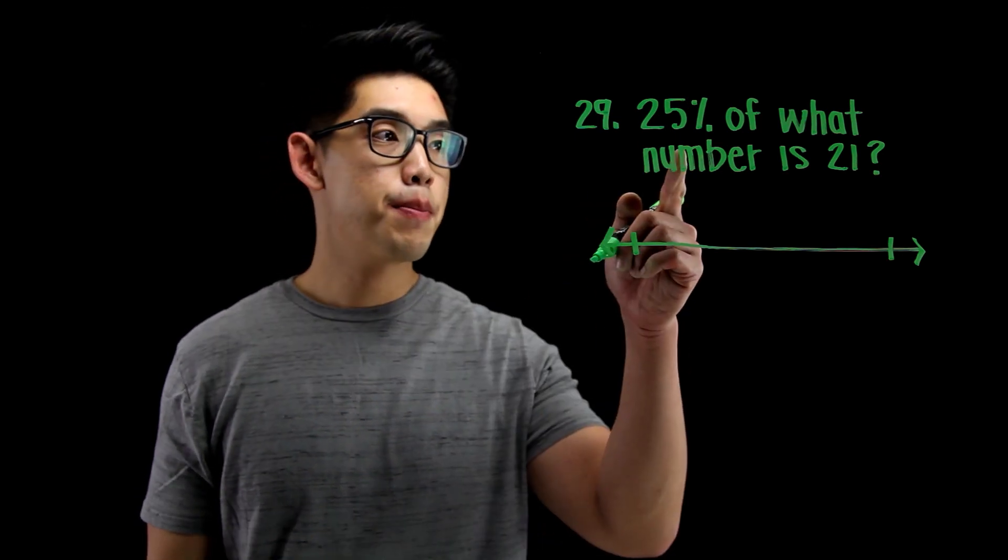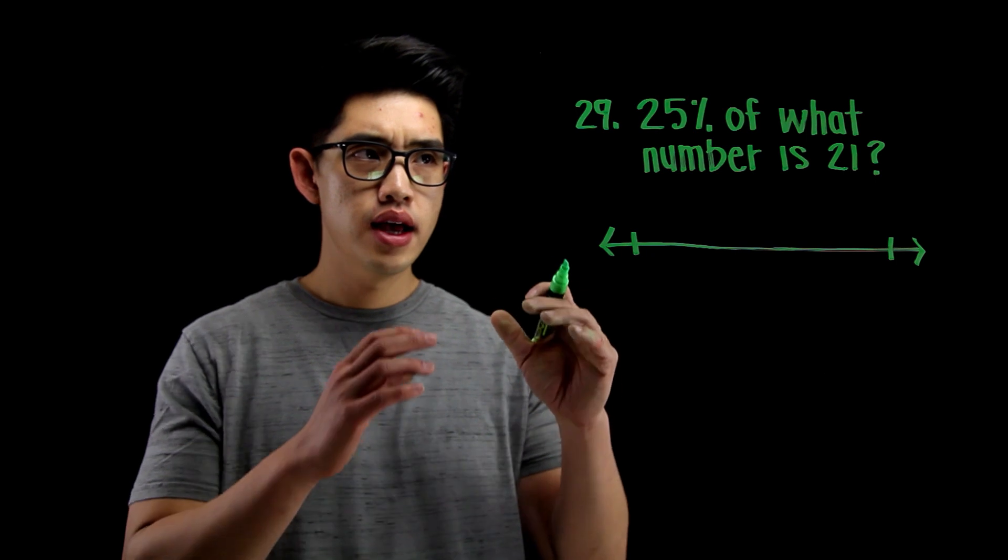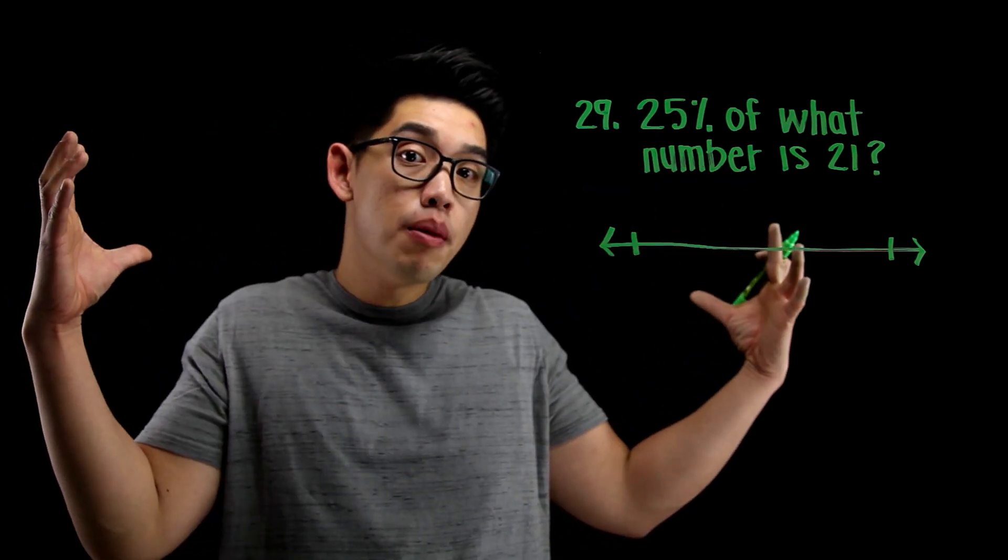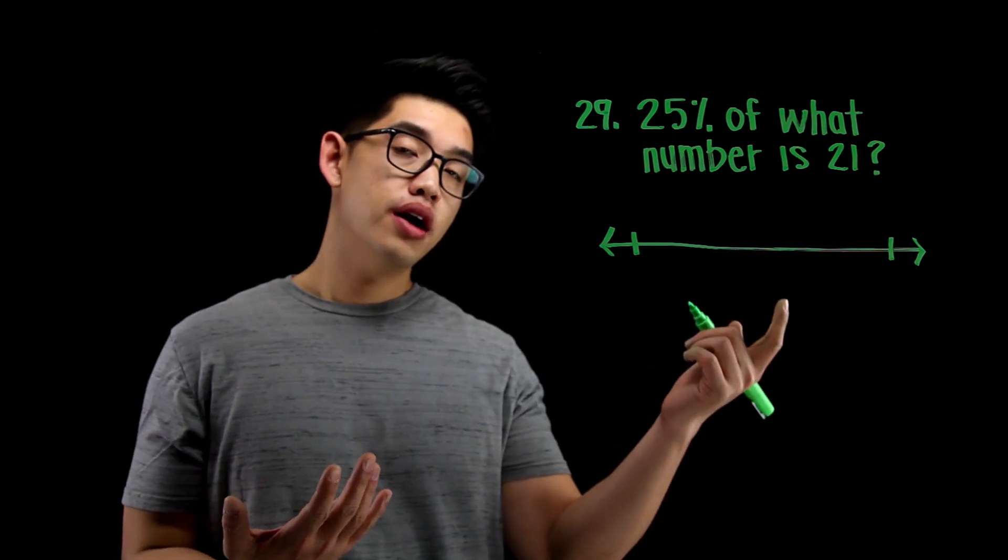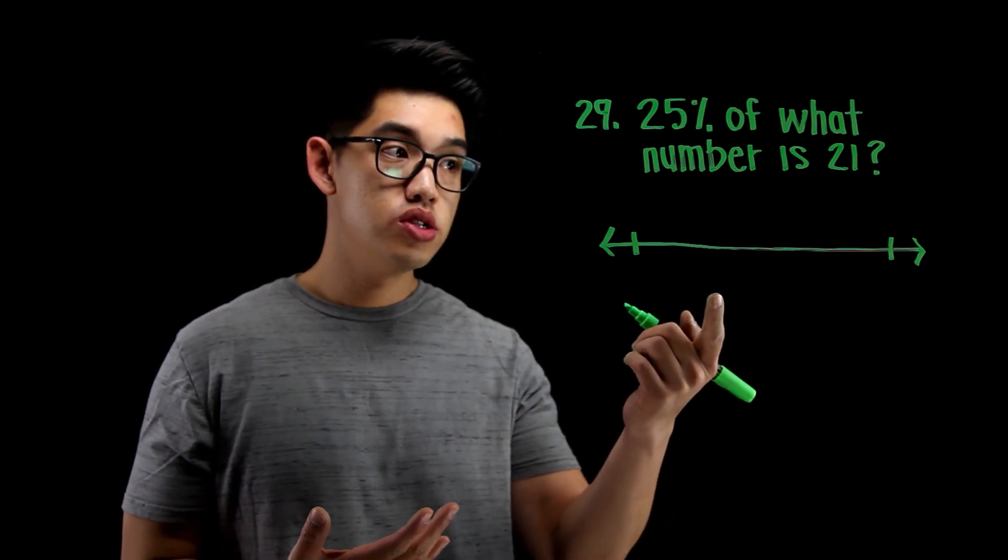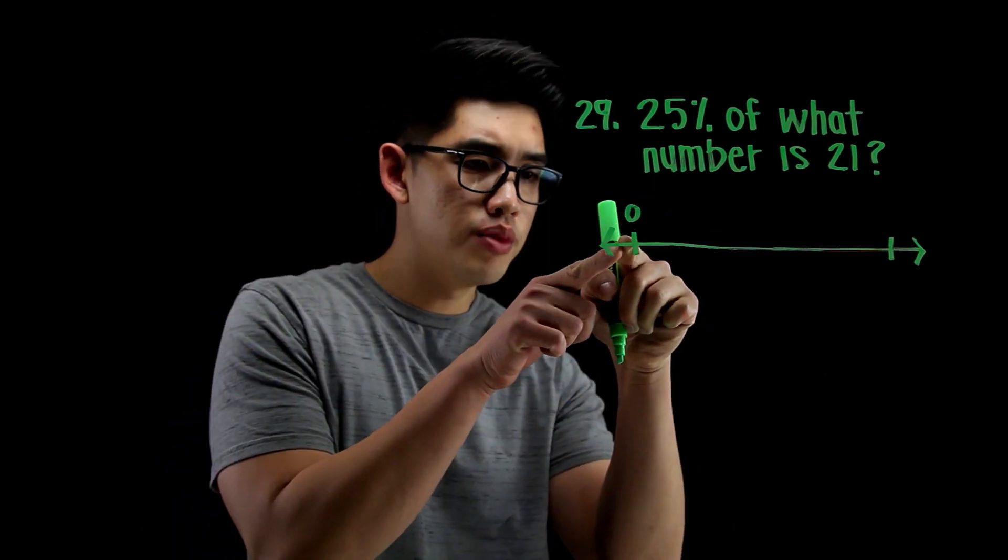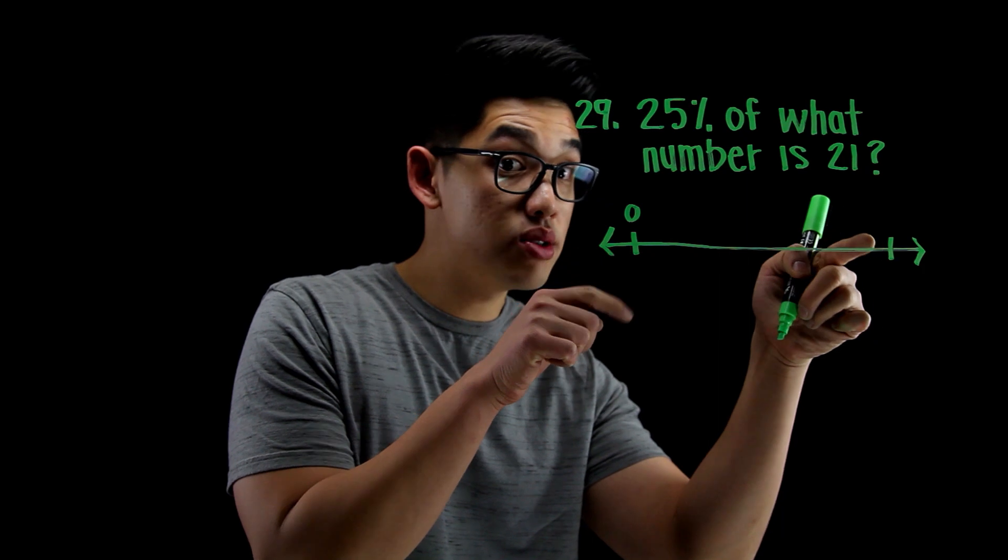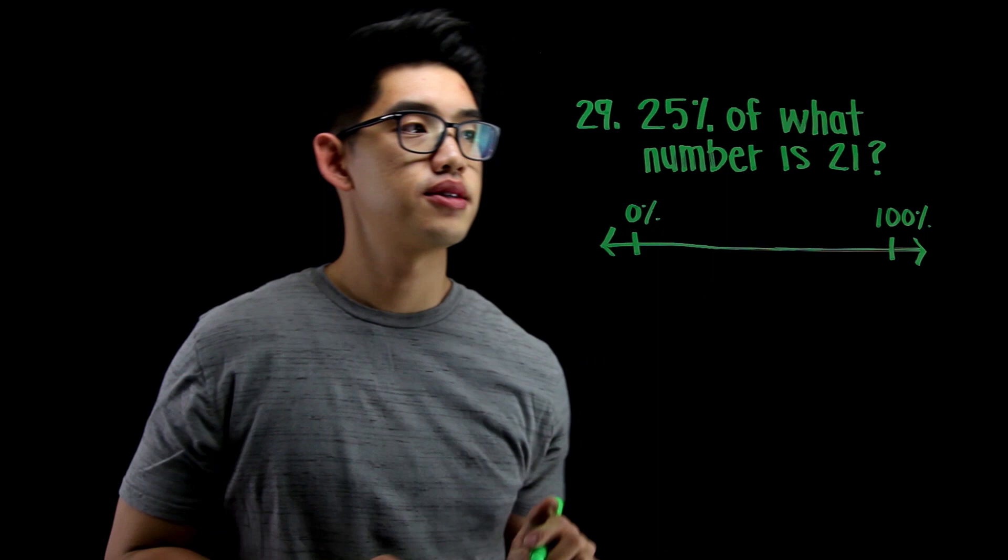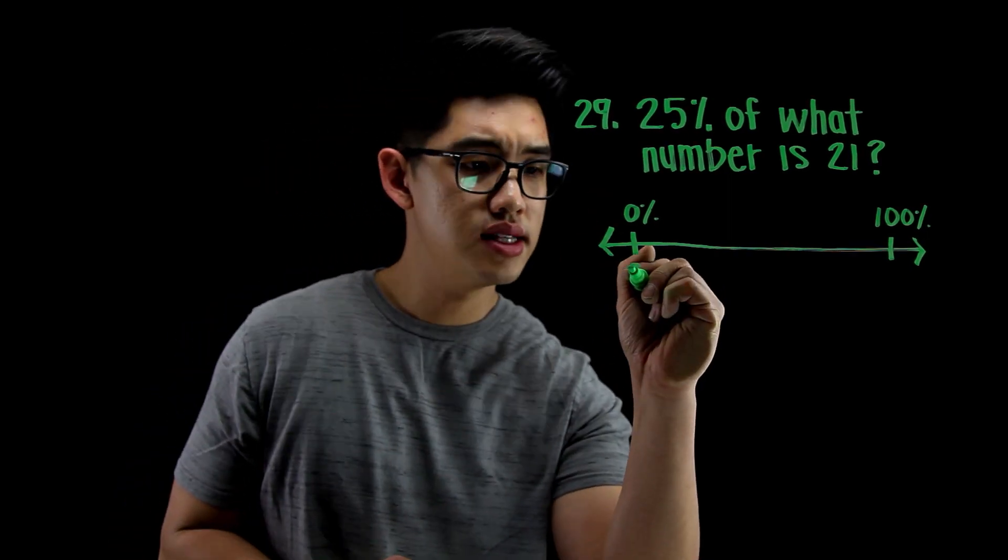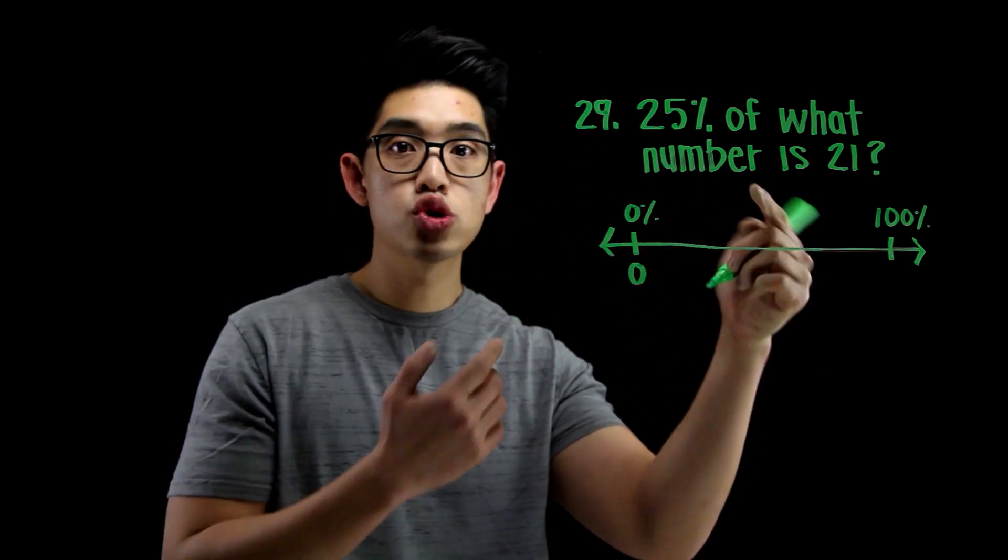Number 29 says 25% of what number is 21? So we're going to get 25%, a portion of this huge number, but only get 21. One method that I could do is using the number line. I can say that this is 0, and from here all the way over there, that's 100%. And that's 0%. And we can also say that this is 0. I know 25% is 21. So I know that if I divide this up into 4 and say that this is 25% here, this is 50% here, this is 75% here, I'm making it all into equal increments. I know that 25% is 21.